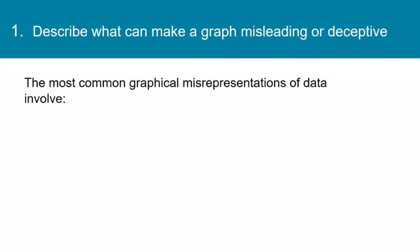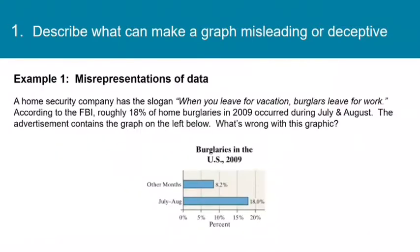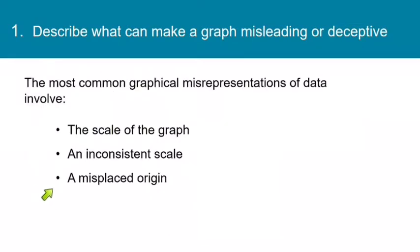The most common graphical misrepresentations of data involve the scale of the graph, an inconsistent scale, or a misplaced origin. All of these things can trick the eye so that the author, whether intentionally or unintentionally, misleads the reader.